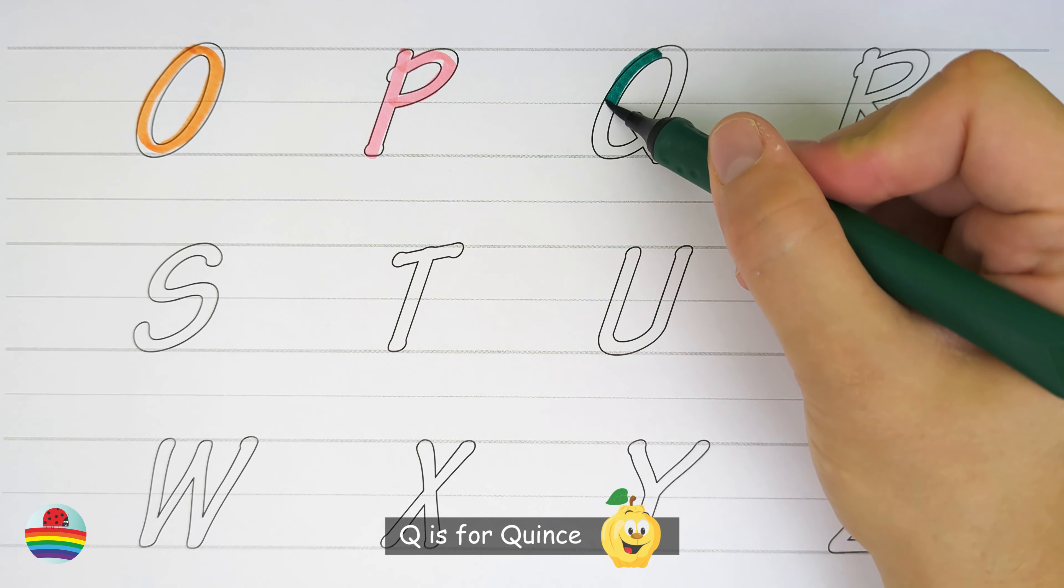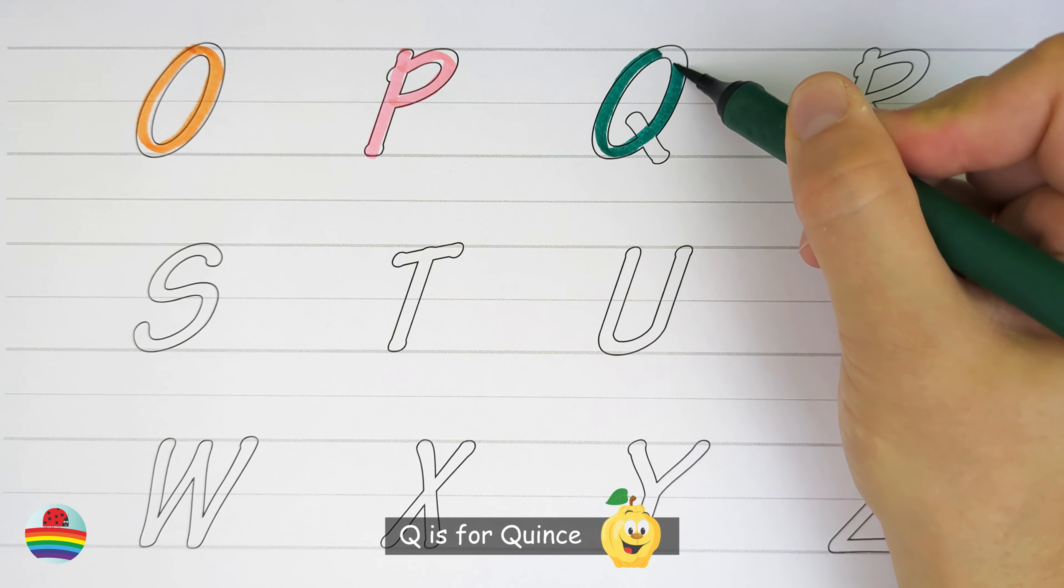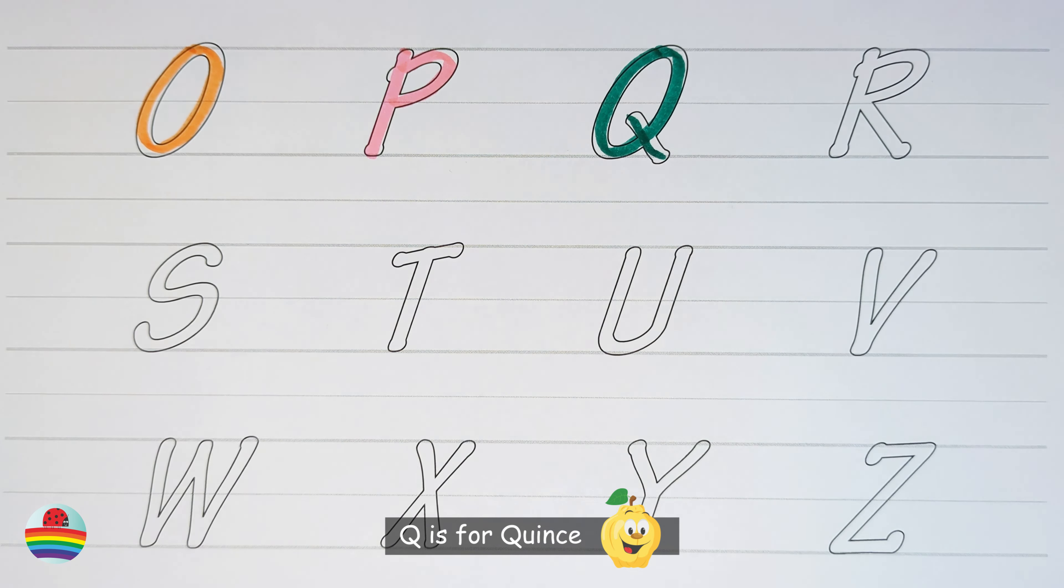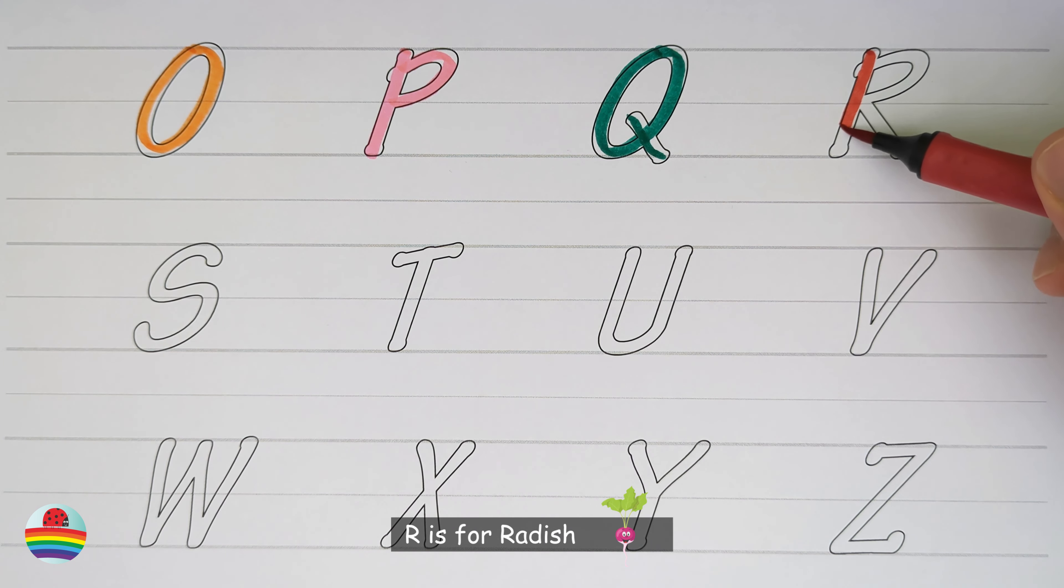Q. Q is for quince. Q. R. R is for radish. R.